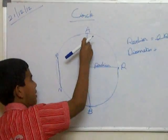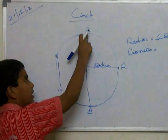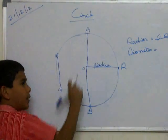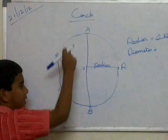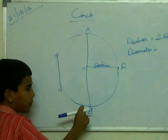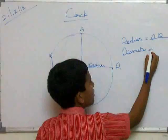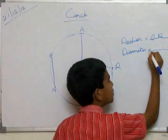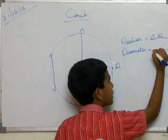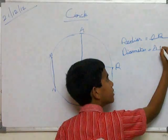The diameter of the line is starting from this point to this point. So here A and any point is P. So diameter is equal to AP.